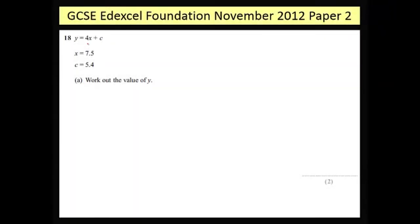In this question we're given the formula y equals 4x plus c, and we're told x is 7.5, c is 5.4, and we have to work out y. Well, using the formula we need to do 4 lots of x and then add c.